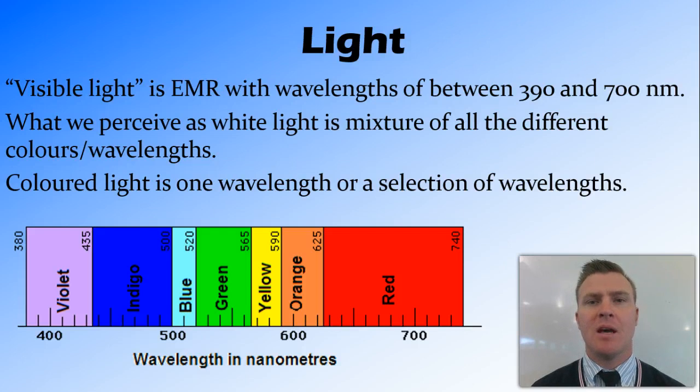So there'll be some electromagnetic radiation at around 400 nanometres, some at around 700, some at 500 and 600, so all these mixes together to form what we see as white light.